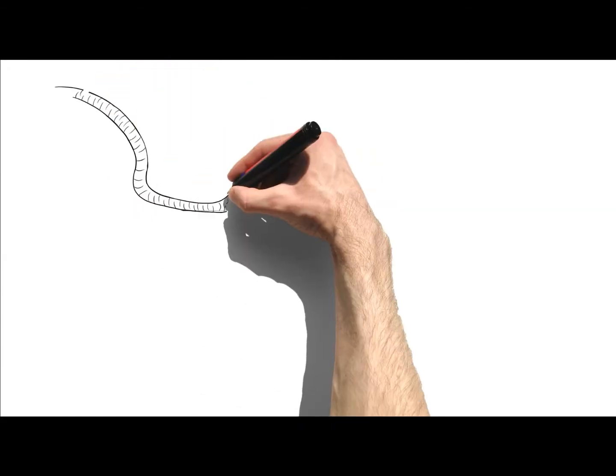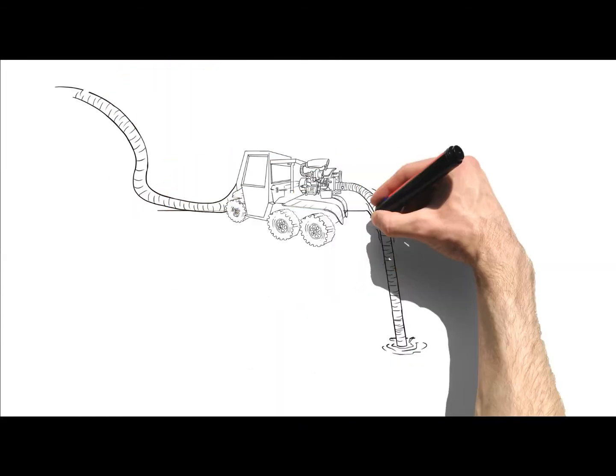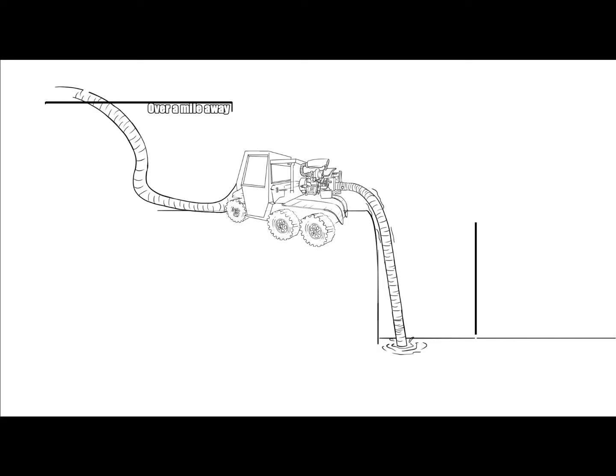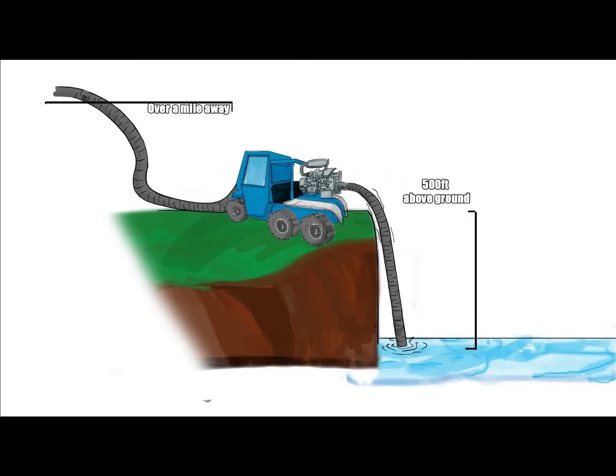The Trident pump can deliver water at impressive distances, over 500 vertical feet and over a mile away. That's incredible coming from a quarter-ton pump.